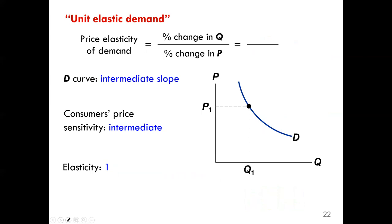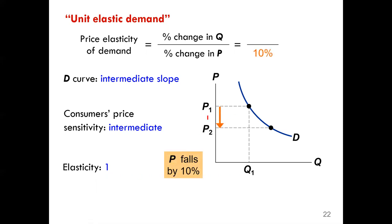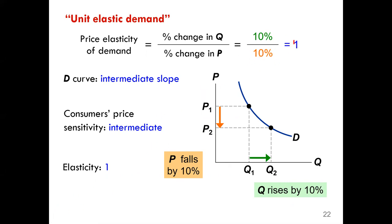The third demand curve is unit elastic demand. This curve has an intermediate slope and the price elasticity is also intermediate — the elasticity equals exactly one. When price drops from P1 to P2 by 10 percent, quantity demanded also rises by a commensurate 10 percent, so 10 percent divided by 10 percent equals one.